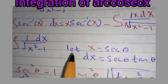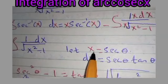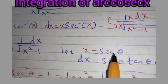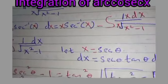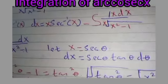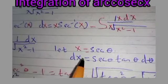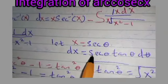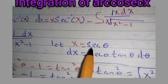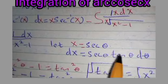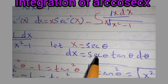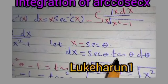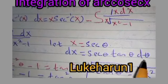We let x equal sec θ. Differentiating both sides, dx is equal to sec θ·tan θ dθ.